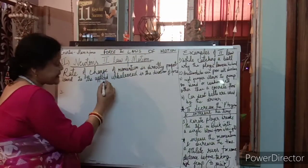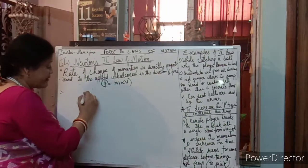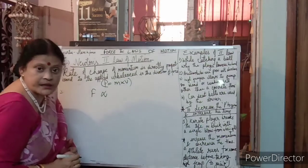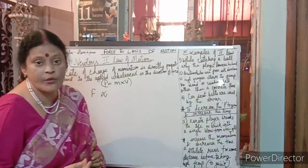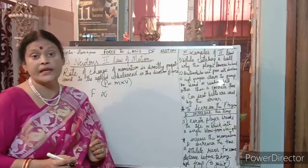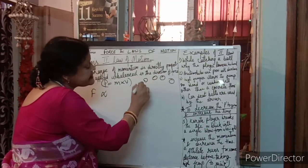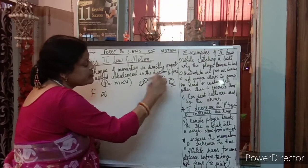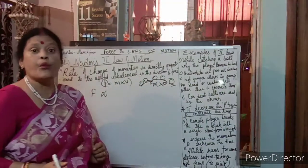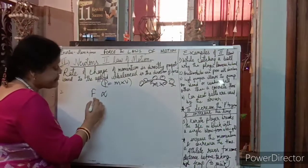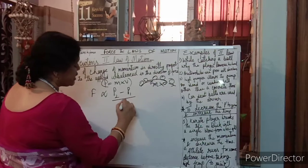Momentum p = m×v. The second law states F is directly proportional to the change of momentum — greater the force, greater the momentum; lesser the force, lesser the momentum. F is proportional to the rate of change of momentum: F ∝ (p₂ − p₁) / t.